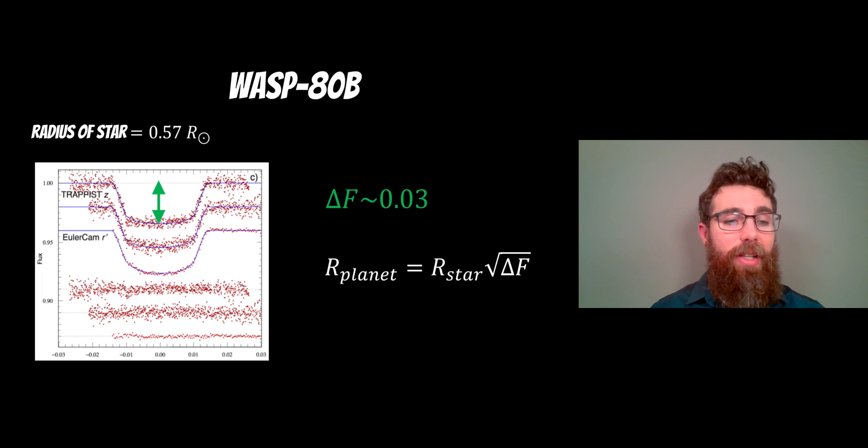You've got the transit there, taken from the scientific paper where the information of the planet was published. From the top transit there, you've got approximately 0.03 for your change in brightness or the change in flux. It goes from 1 down to about 0.97.